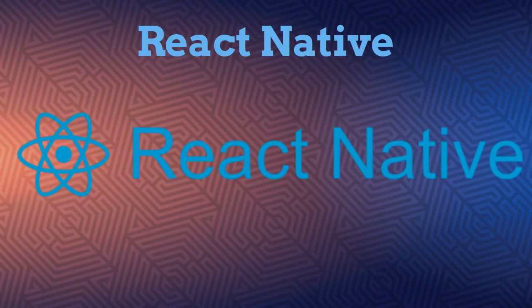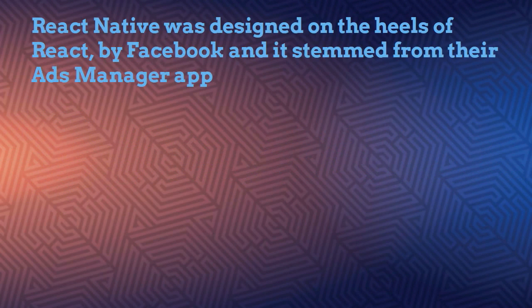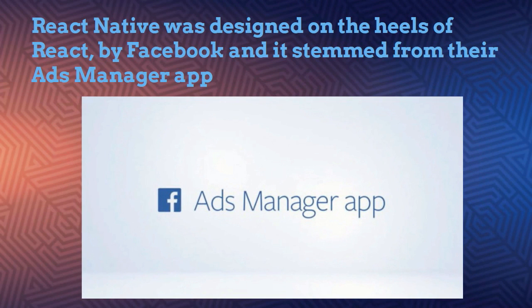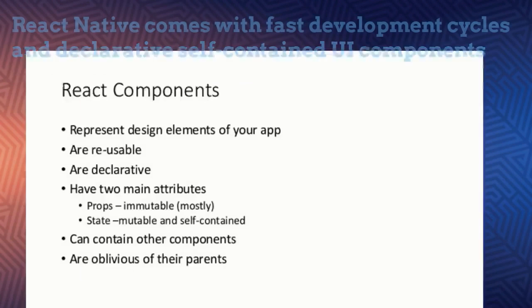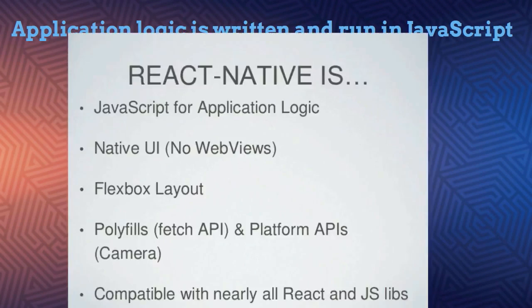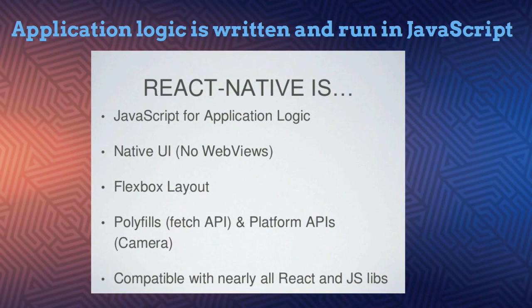Number six: React Native. React Native separates itself from the rest of the frameworks on this list by shifting its focus from creating hybrid apps to creating actual real native apps. React Native was designed on the heels of React by Facebook and it stemmed from their Ads Manager app. It comes with fast development cycles and declarative self-contained UI components while retaining the speed and feel of native apps. The application logic is written and run in JavaScript while the UI is fully native, offering developers a chance to maintain the native look and feel without having to use traditional languages.